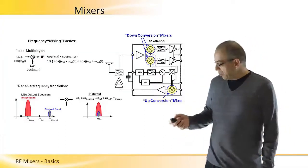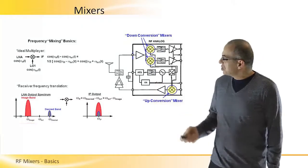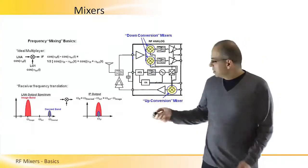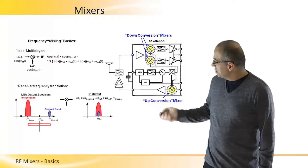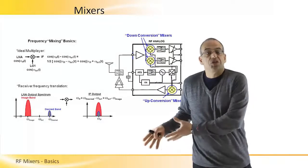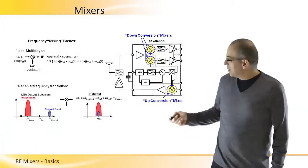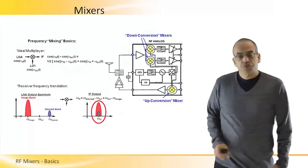But we always need to remember that there's an image frequency that is the same distance from the LO frequency that can be converted into the same IF, or intermediate frequency, after the conversion. And it can actually degrade or destroy the actual signal we are looking at.